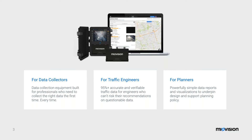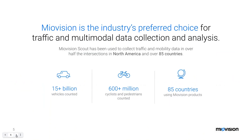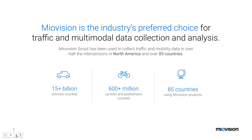Traffic engineers can now with confidence sign off on the data knowing that it is the right data and, if needed, easily verifiable. Planners can trust that the data they are basing their decisions on is ground truth. MyoVision is the world leader in intersection traffic data. The MyoVision Scout has been used to count mobility data in over half the intersections in North America, and our equipment has been deployed in over 85 countries to count more than 600 million pedestrians and cyclists and over 15 billion vehicles.